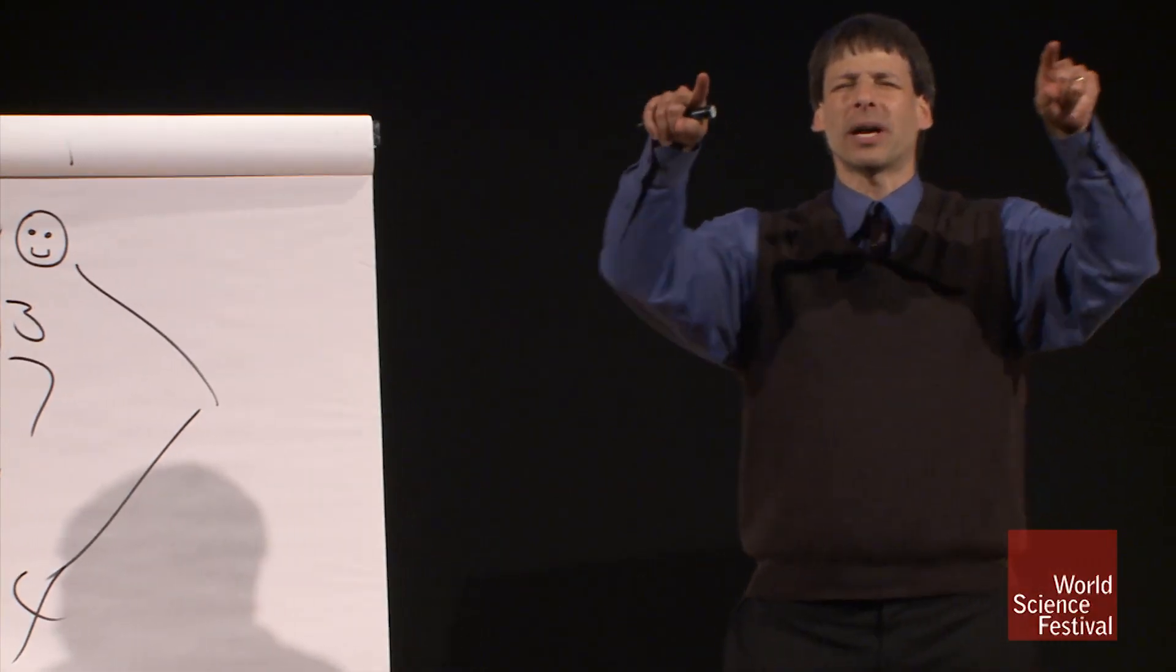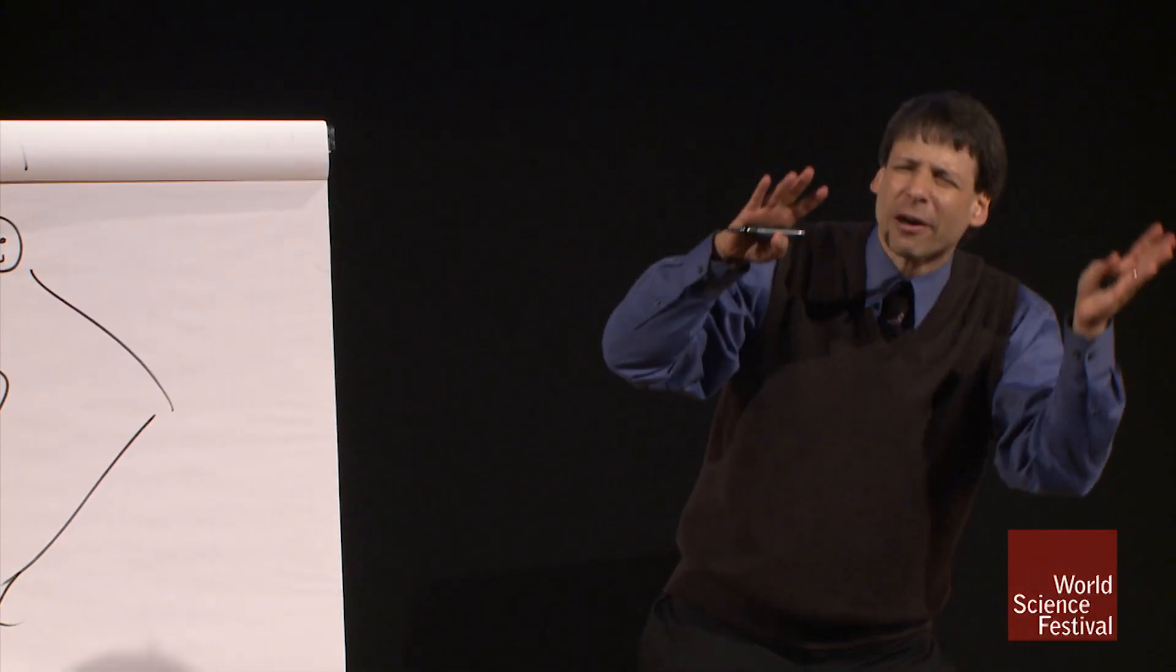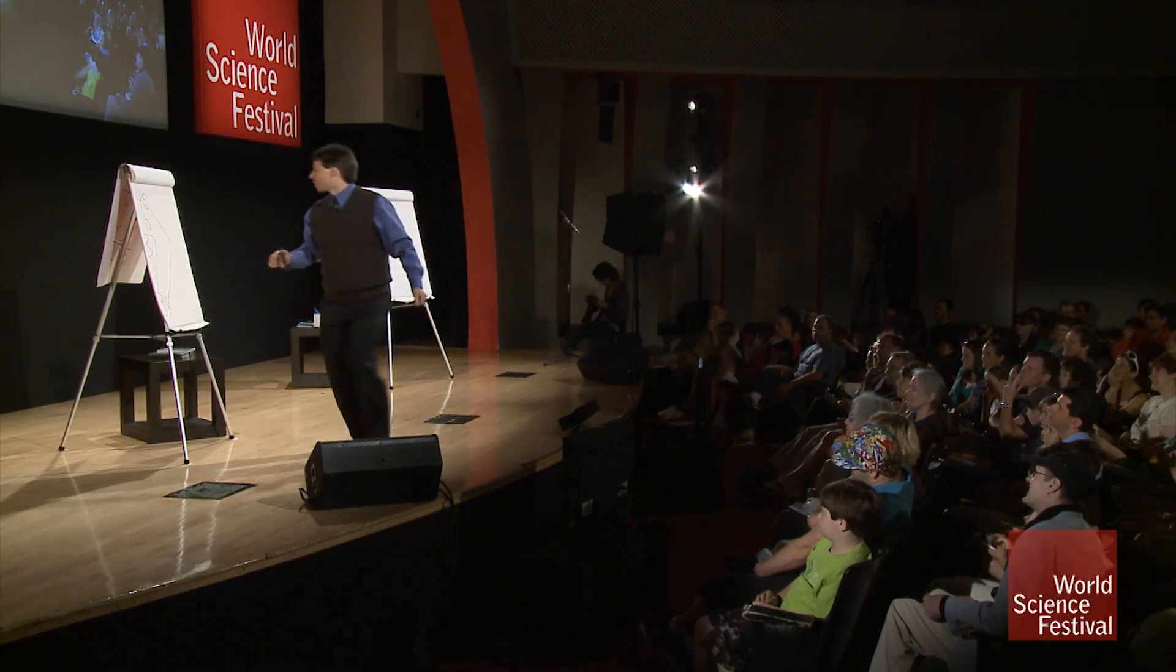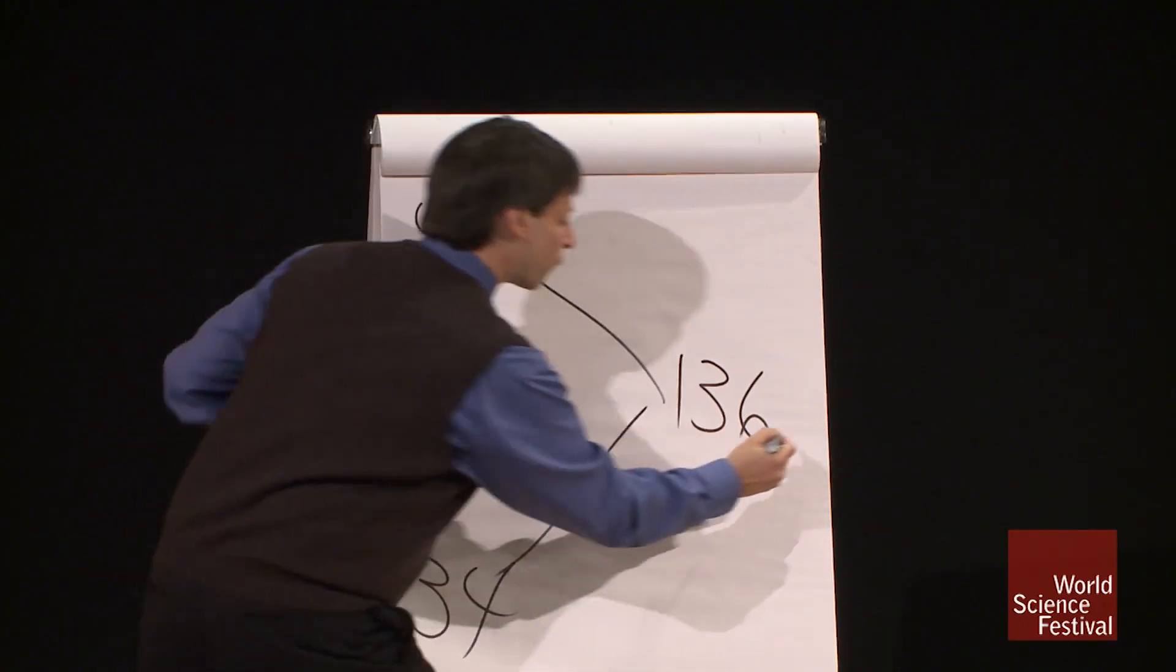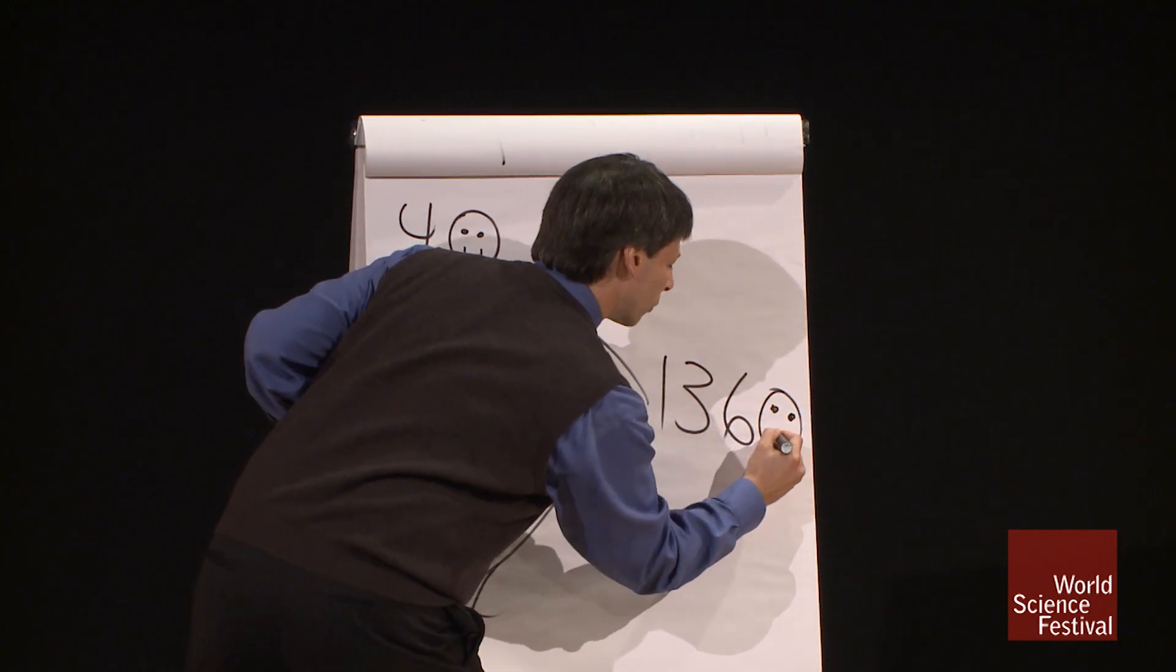120 plus 16 added from left to right. 120 plus 16 is? 136. Good. Now, we bring in the friendly zero. That's 1,360.